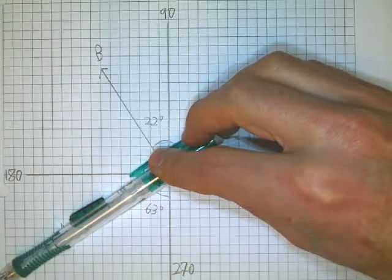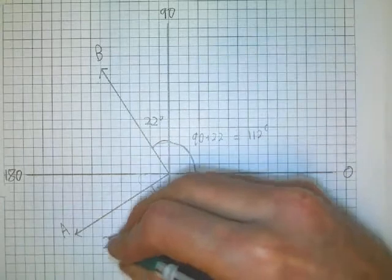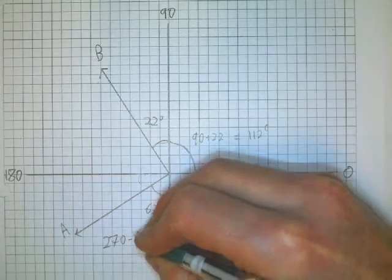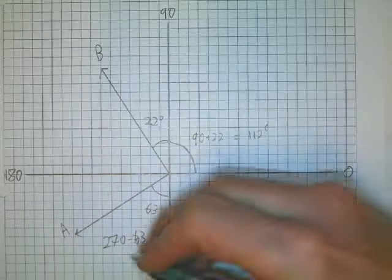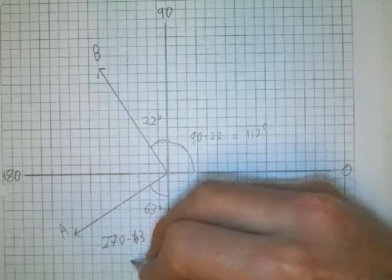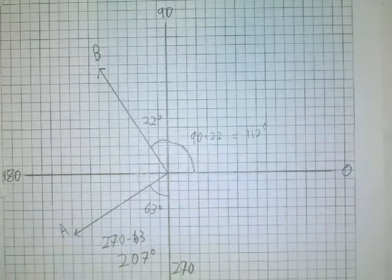So it's 270 minus 63 is, of course, what is that, 207? 207 degrees is the trigonometric angle.